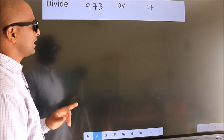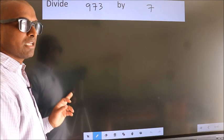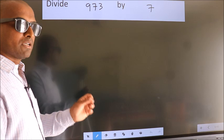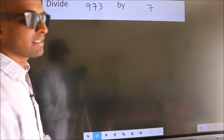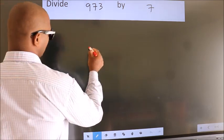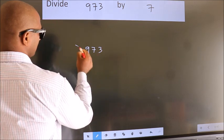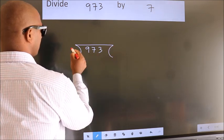Divide 973 by 7. To do this division, we should frame it in this way: 973 here, 7 here.